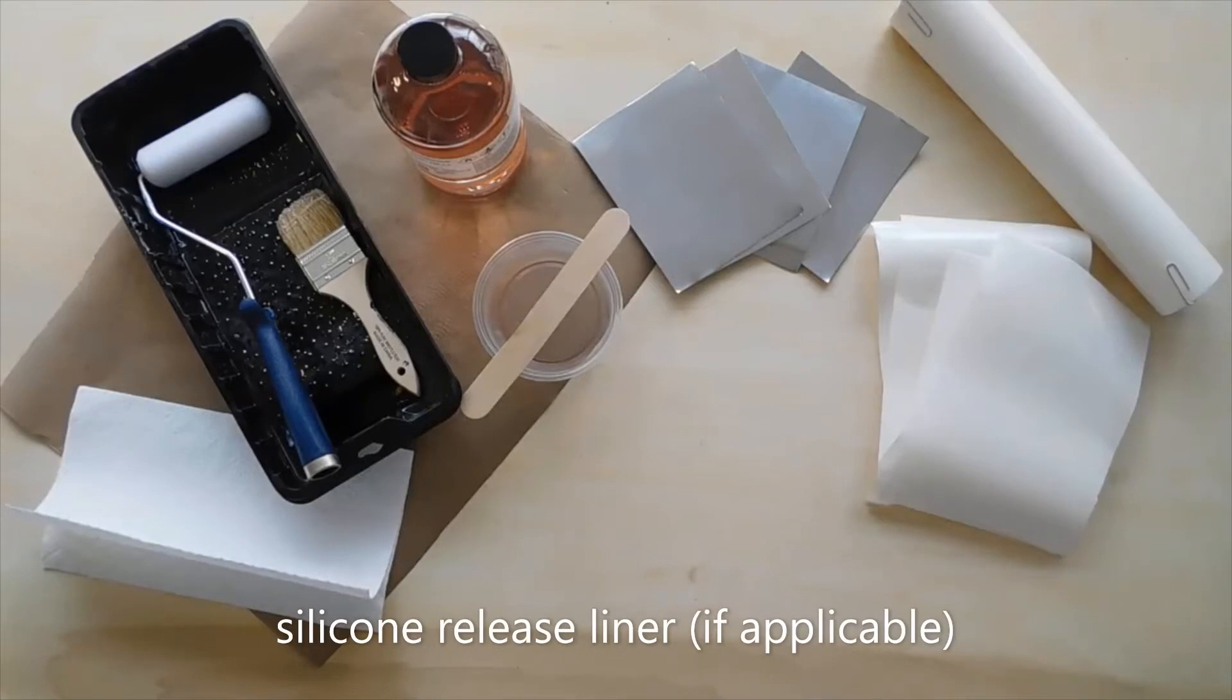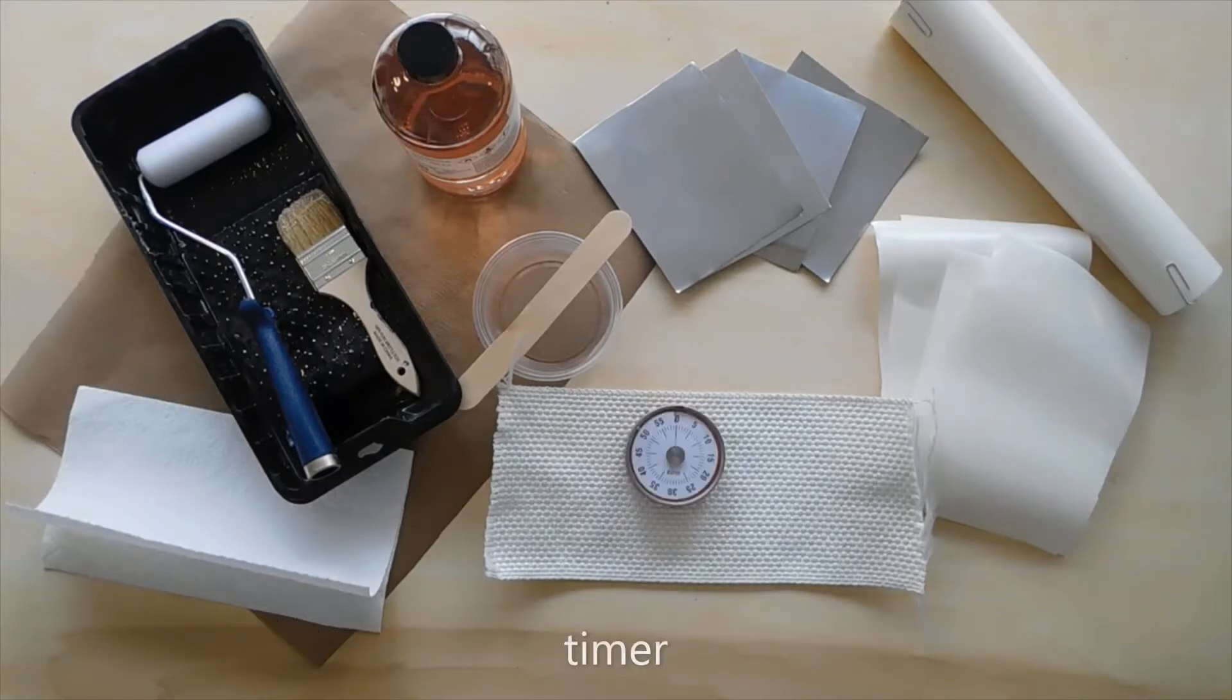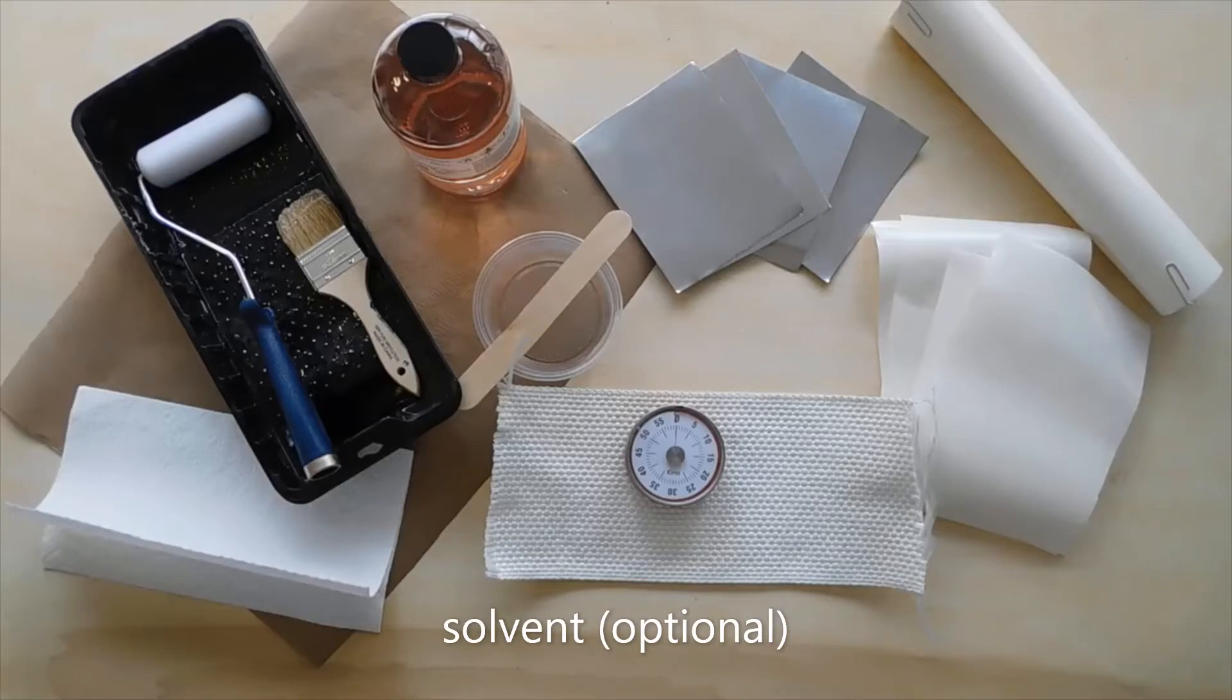You'll need a silicone release liner if you will be applying spur at a later time, the substrate you will eventually bond to (one example being glass cloth), and in this case I will use a timer and an appropriate solvent for thinning the spur.